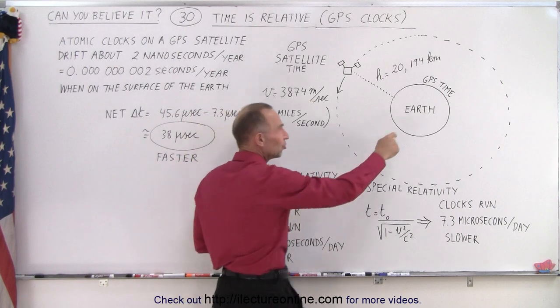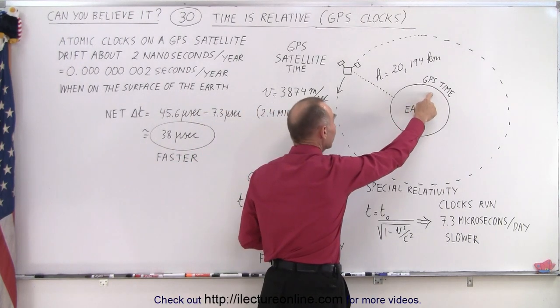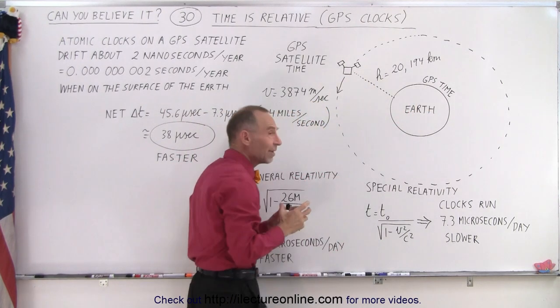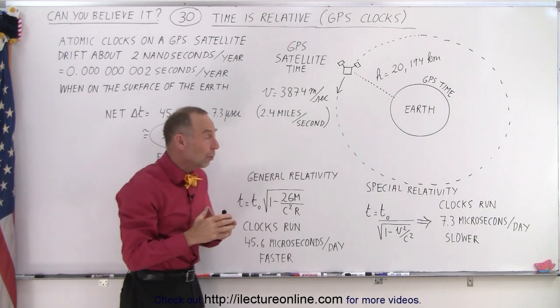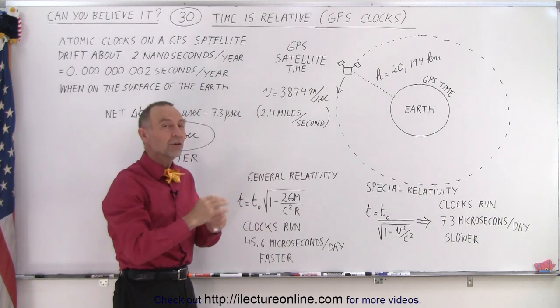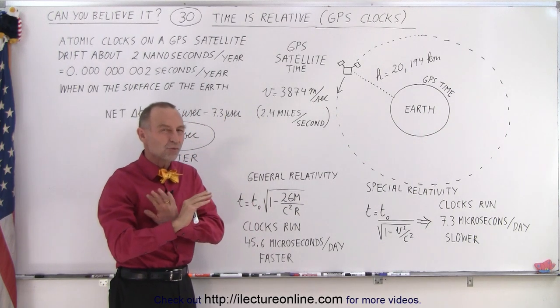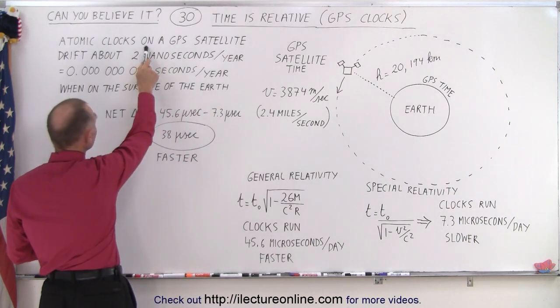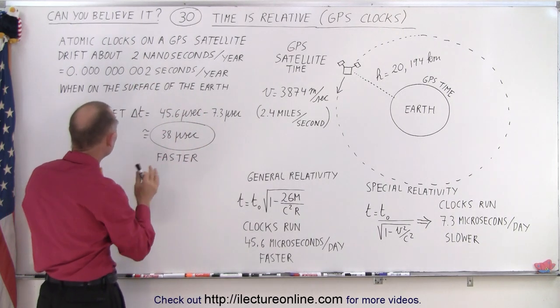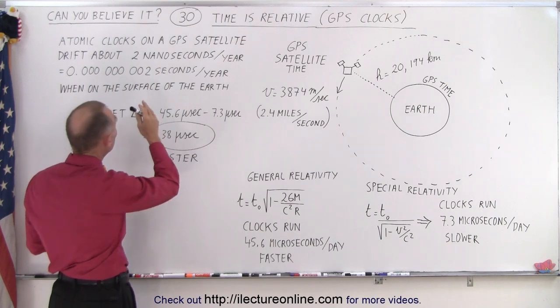So on the Earth, we have what we call GPS time, which is really accurate. And in order to keep the time accurate in our satellites, we have put atomic clocks in those satellites. And atomic clocks are extremely accurate.